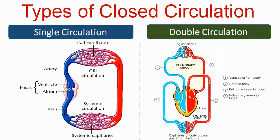Single circulation is particularly found in fishes. In single circulation, blood flows only once through the heart during one cycle. Blood flows from the heart to the gills for oxygenation.